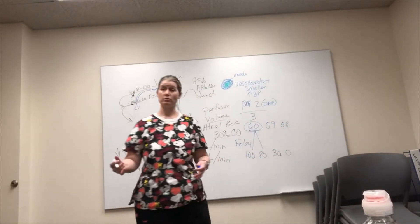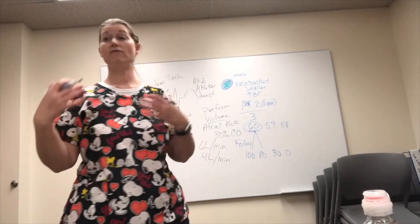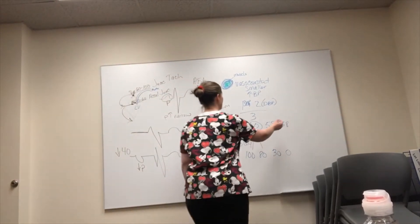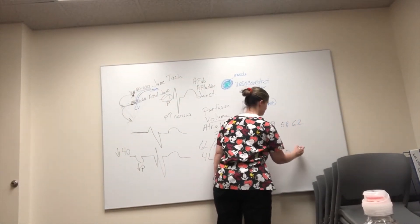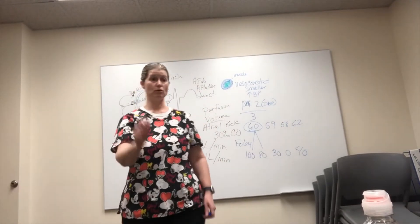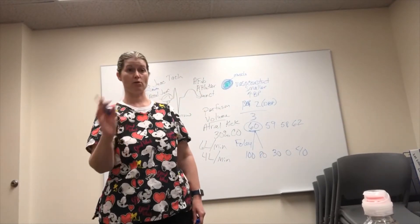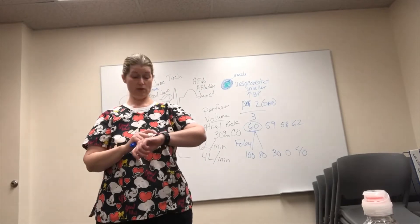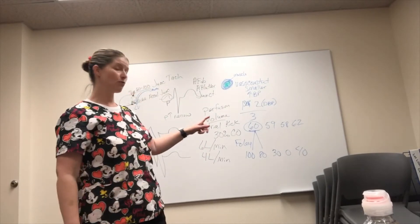You do something for their blood pressure. You give them fluid, you give them a vasoconstrictor. Now their mean is 62, and I kid you not, now their urine output is 40. You can see it. You can watch the MAP, you can watch the urine output.